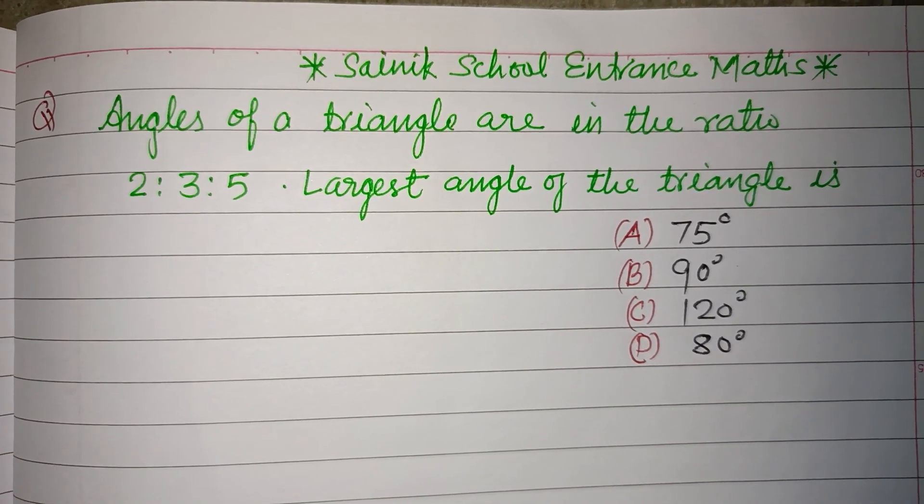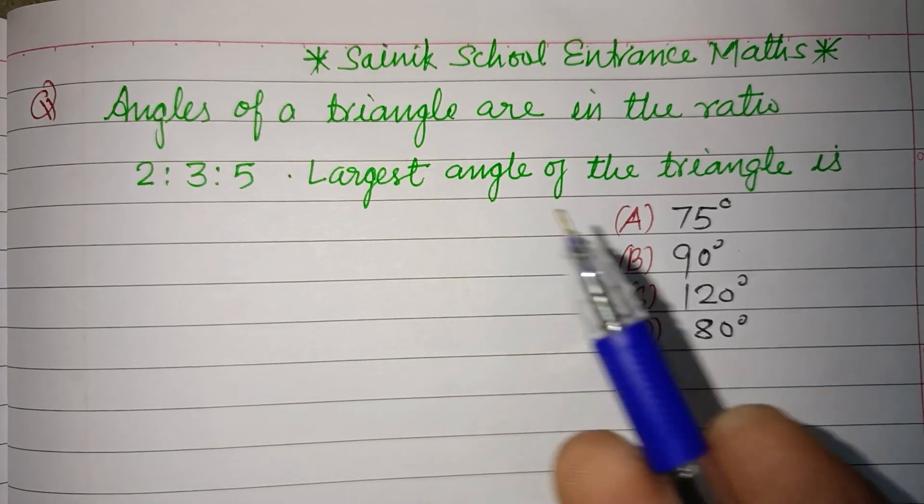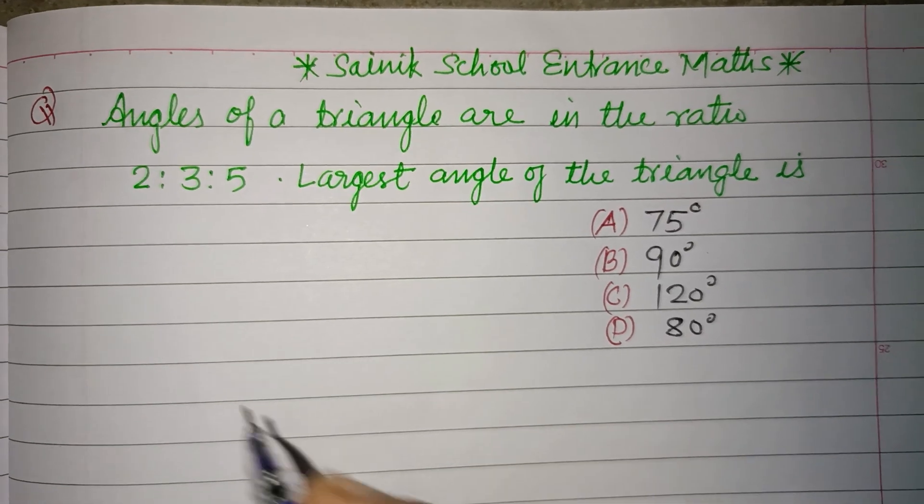Hello viewers, warm welcome to this YouTube channel. Question from Sainik School entrance exam: Angles of a triangle are in the ratio 2:3:5. Largest angle of the triangle is?